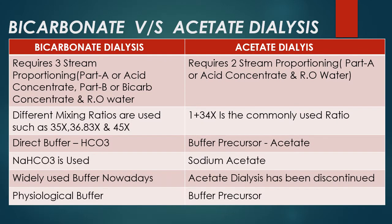If we compare bicarbonate and acetate dialysis: for bicarbonate dialysis, you will require a three-stream proportioning — that means Part A concentrate (acid concentrate), Part B concentrate (bicarb concentrate), and RO water. For acetate dialysis, you will require two-stream proportioning — that means a Part A containing acetate, along with RO water.